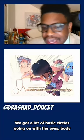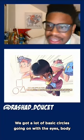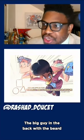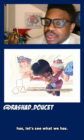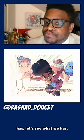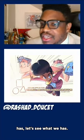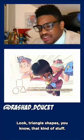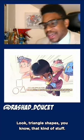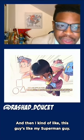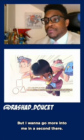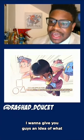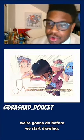She has a lot of basic circles going on with the eyes, body type, head, things like that. The big guy in the back with the beard has a pointy nose, little triangle shapes, that kind of stuff. And then this guy is like my Superman guy — I also gave him a triangle nose. I want to go more into me in a second and give you an idea of what we're going to do before we start drawing.